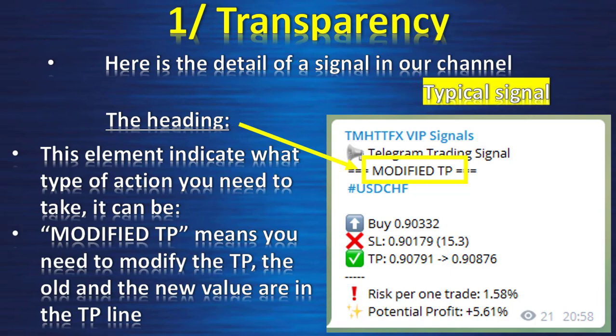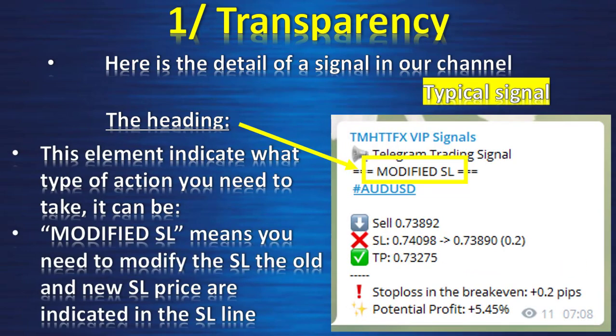'Modified Target Profit' means you need to modify your target profit — the old and new values are shown in the target profit line. 'Modified Stop Loss' means you need to modify the stop loss — the old stop loss, new stop loss, and the difference in pips are all indicated. Also, I use IC Markets, which for me is one of the best brokers because the spread is very tight and you can do scalping trades with it, so you will get better results following my signals with IC Markets.